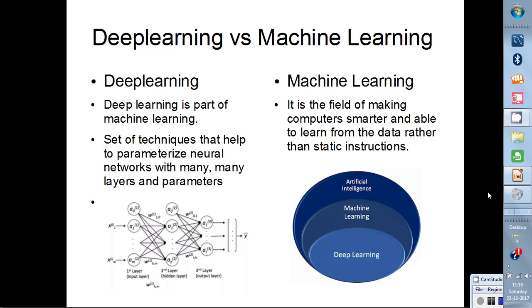Machine learning is a field of AI where it tries to learn from data instead of doing programming. In programming, we give instructions which are very static in nature — if this happens then do this, if that happens then do this. But in machine learning, it learns. We have algorithms like linear regression, logistic regression, support vector machine, random forest, and decision tree — algorithms which try to learn from the data and can predict for unknown testing data.